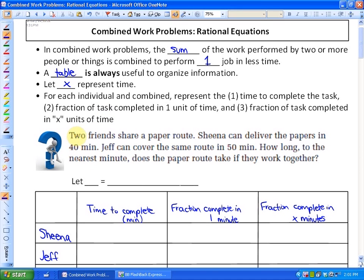Let's read the first question. Two friends share a paper route. Sheena can deliver papers in 40 minutes. Jeff can cover the same route in 50 minutes. How long to the nearest minute does the paper route take if they work together? It better take less than 40 minutes, but it's not necessarily 20 minutes because they take different amounts of time.